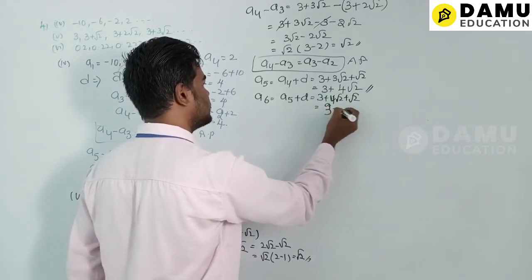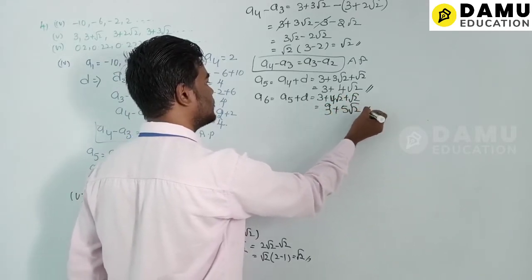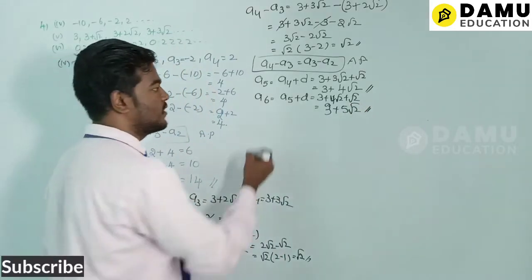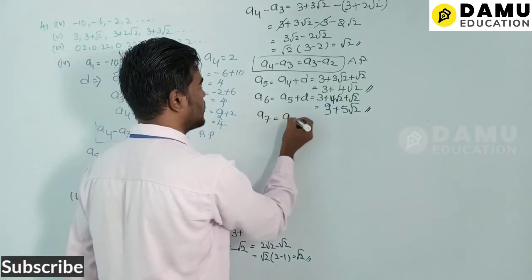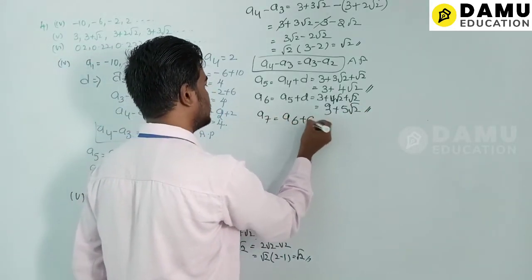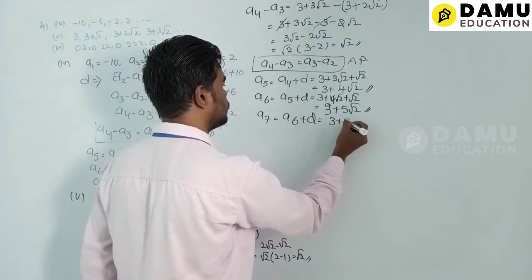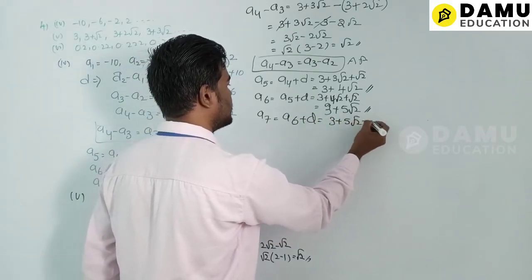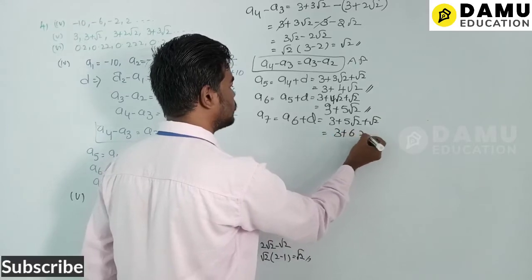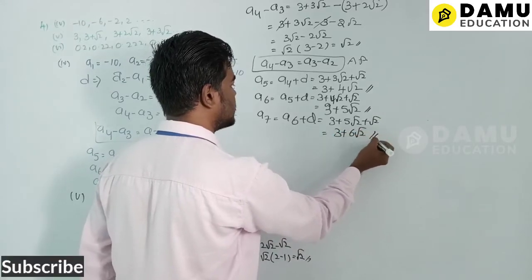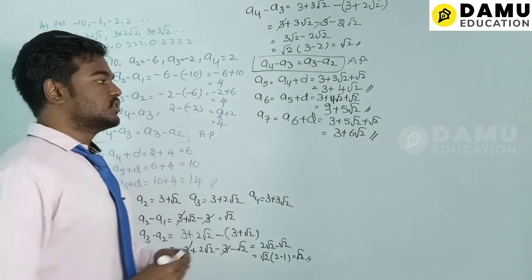Then a7 = a6 + d = (3 + 5√2) + √2 = 3 + 6√2. These are the three more terms for the fifth series.